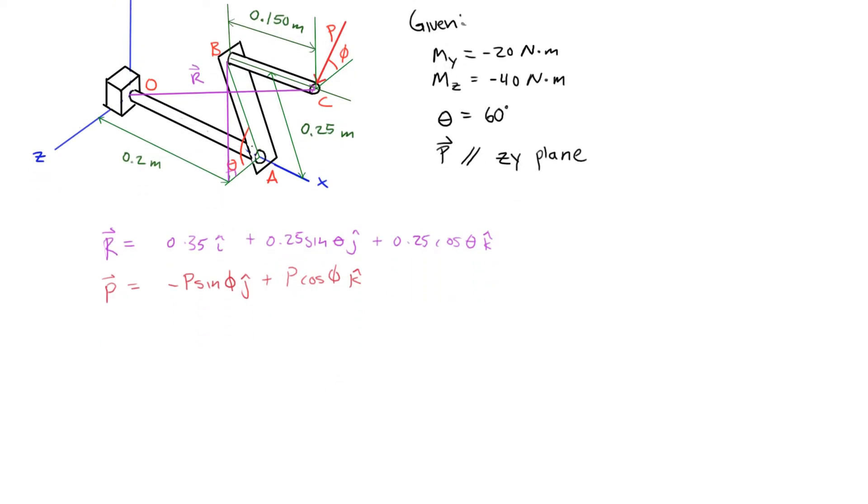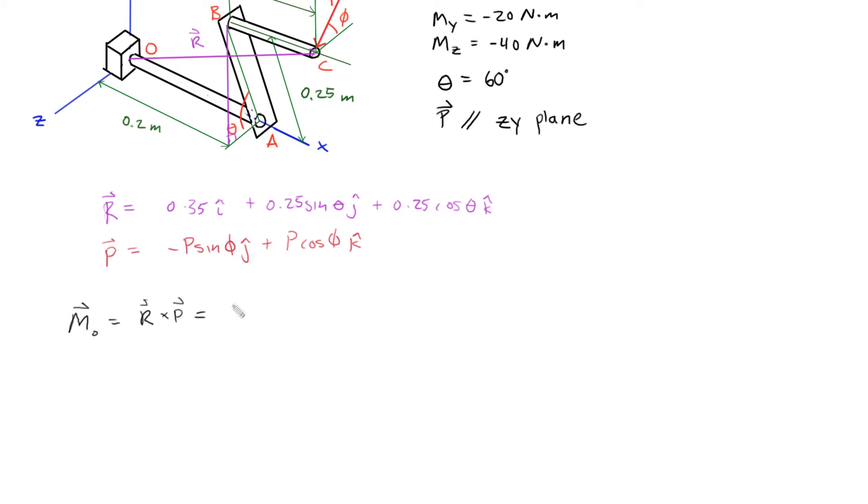Now to find the moment about O, all we have to do is perform the cross product between these two vectors. So the moment about O is equal to R cross P, and that is simply just a 3 by 3 determinant. This is going to be 0.35, 0.25 sine theta, 0.25 cosine theta. And this is going to be 0, negative P sine phi, P cosine phi.